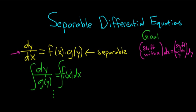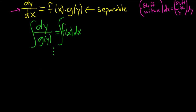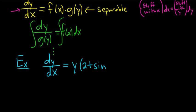Let's go ahead and do a simple example so you see how this actually works in practice. So the problem at hand is dy/dx equals y times 2 plus sine x. So right away, we can see it's separable. This is your g of y, and this is your f of x.